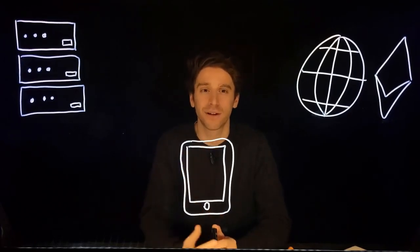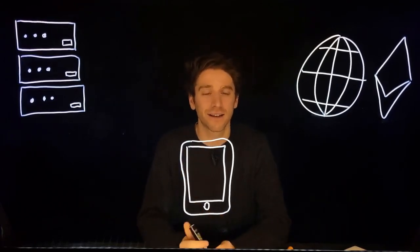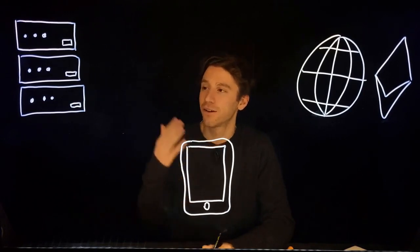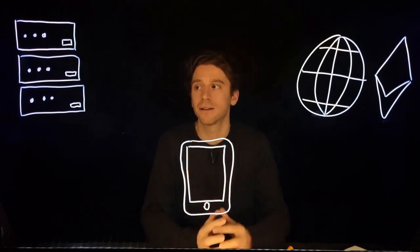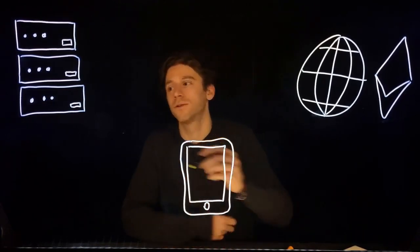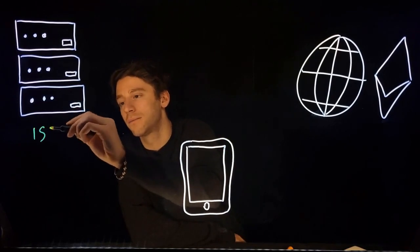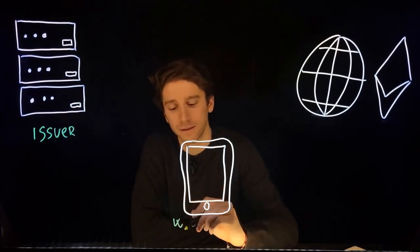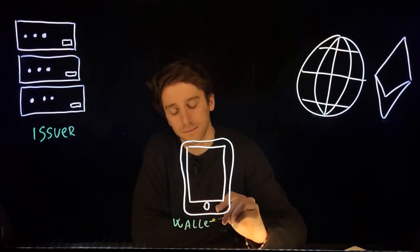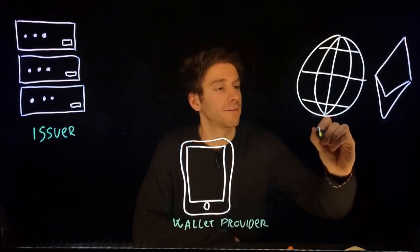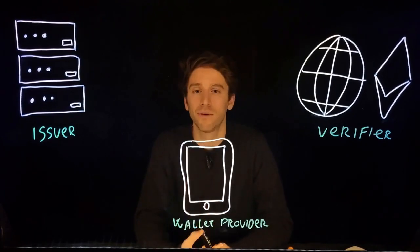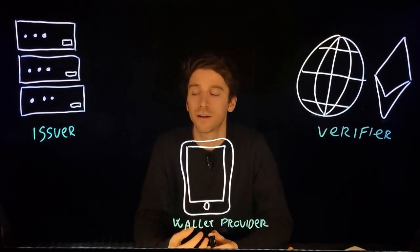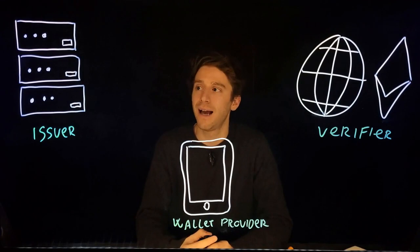I'm going to walk you through the main components of Polygon ID and its architecture. As you can see, there are three main components available in Polygon ID, and each component is tooling for developers that want to act as an issuer, as a wallet provider, or as a verifier. Let's start with the issuer.